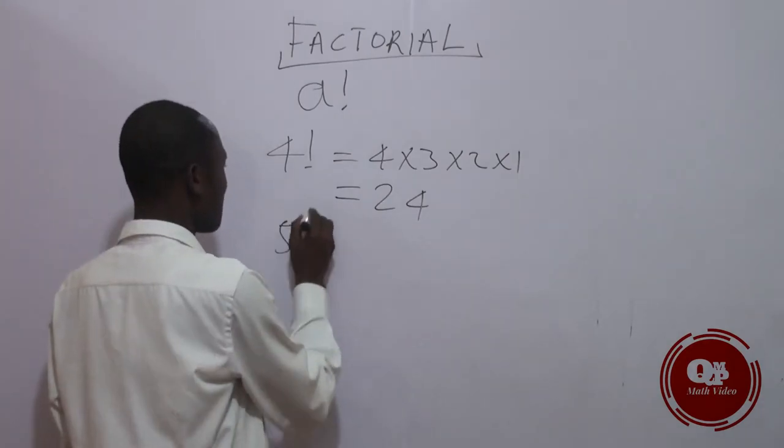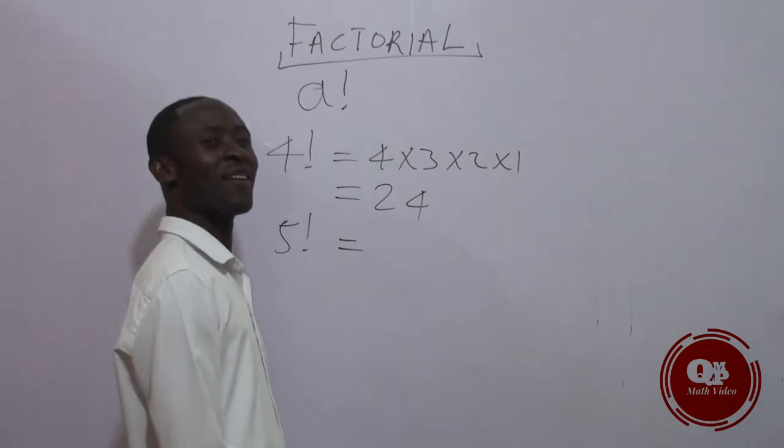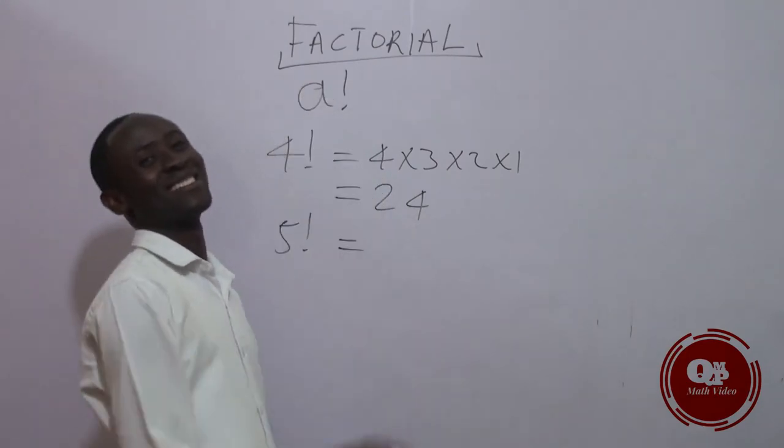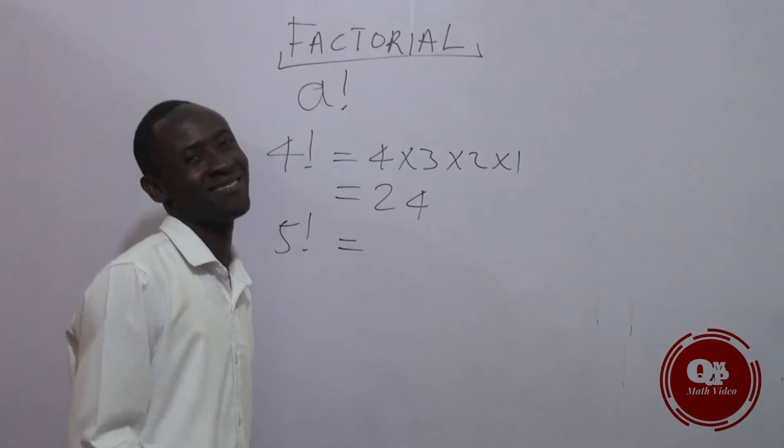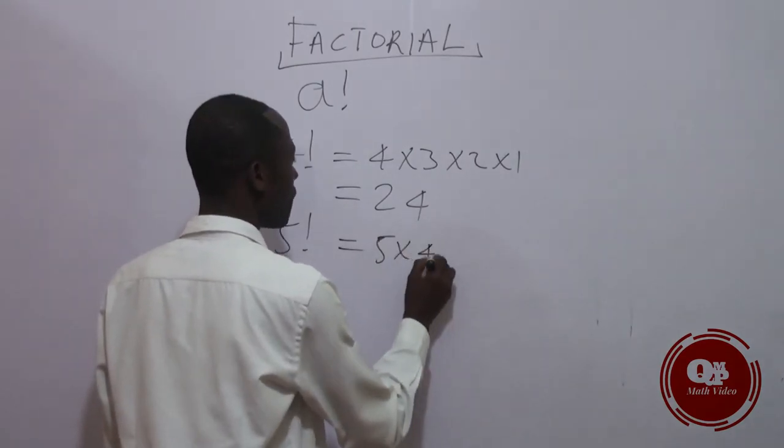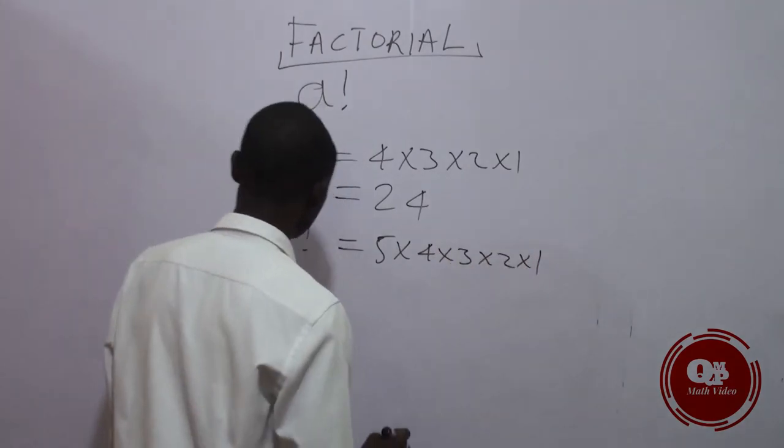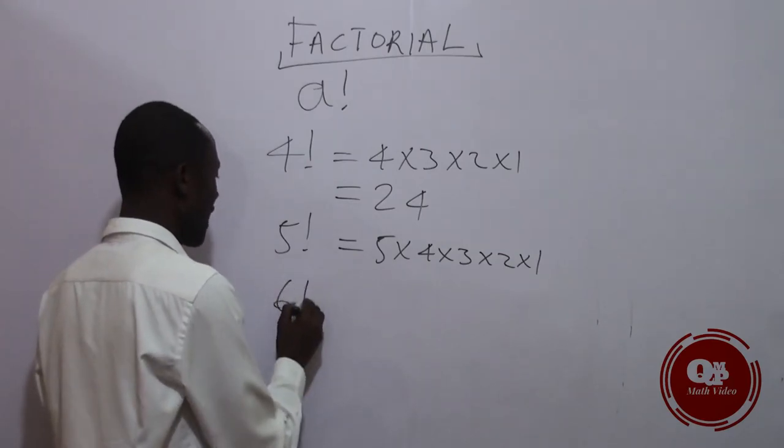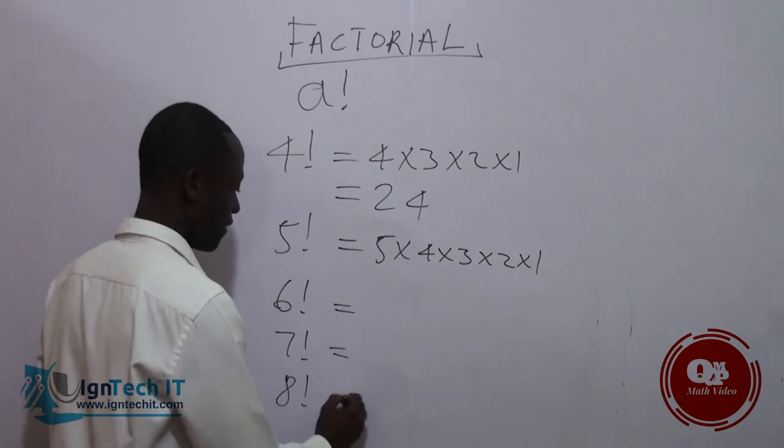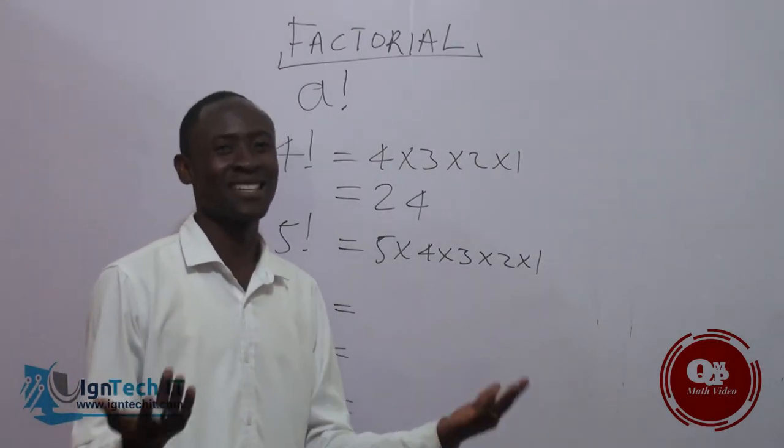Now five factorial: five times four times three times two times one. You can go up until five times four times three times two times one. I have six factorial, seven factorial, and eight factorial.